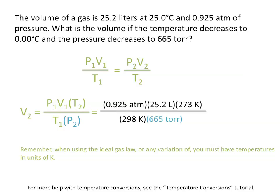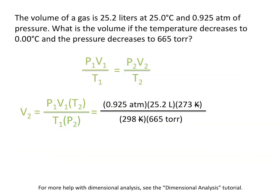What you'll notice is that units of kelvin will cancel out, but our units of pressure, atmospheres and torr, won't cancel out, so we need to use a conversion factor. The conversion factor we'll use is that 760 torr are equal to 1 atmosphere.